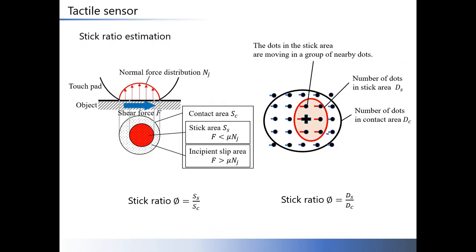When the touchpad touches an object, the contact area is divided into a stick area and an incipient slip area. The stick ratio is calculated by taking the ratio of the contact area and the stick area.